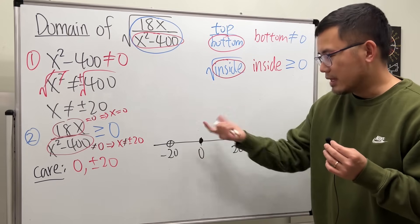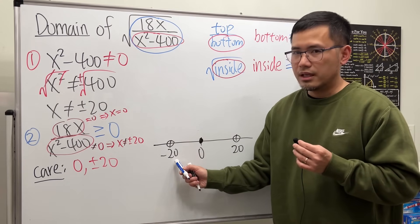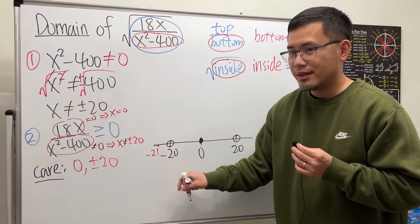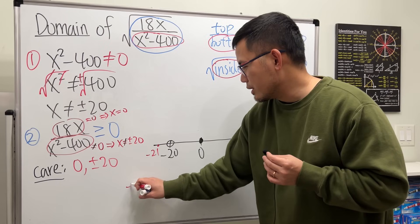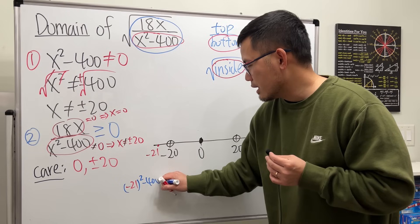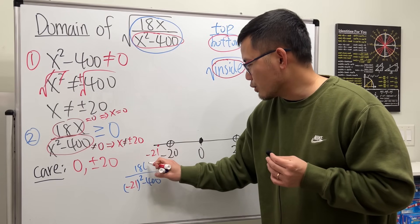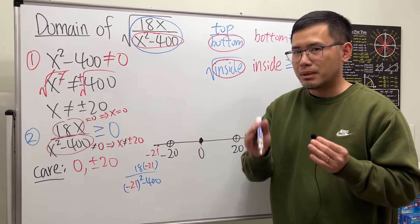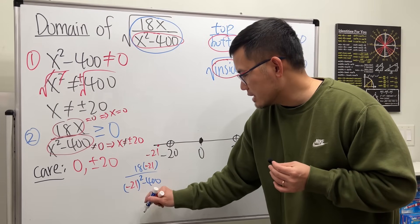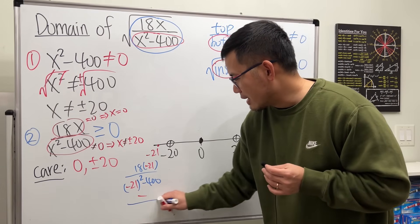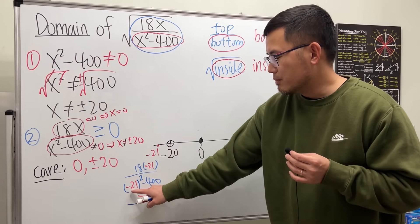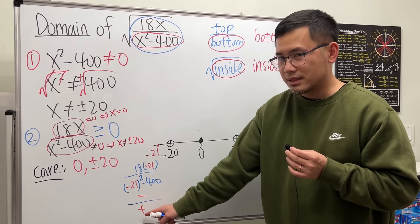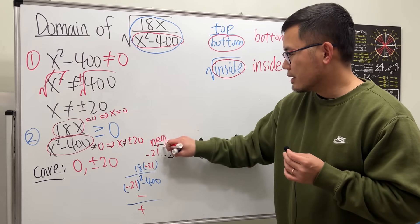Now test each interval. Pick a number less than negative 20, say negative 21. Plugging in: the top is 18 times negative 21, which is negative. The bottom is negative 21 squared minus 400, which is positive. Negative over positive gives negative — not what we want. So the interval less than negative 20 does not work.